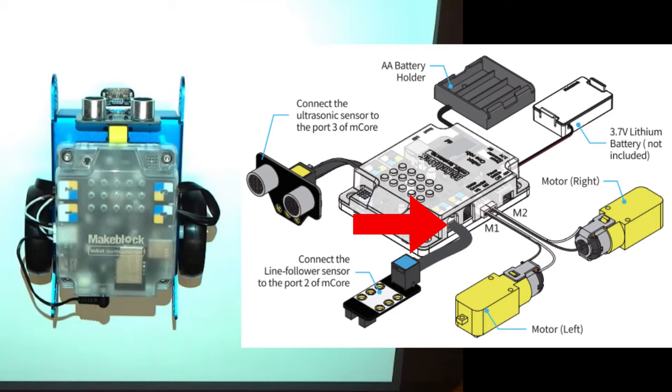Finally, connect the front infrared sensor RJ25 to the number 3 slot on the core. And that's it, you're finished!